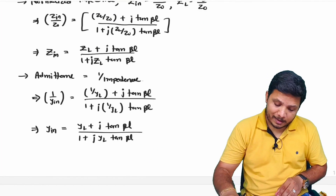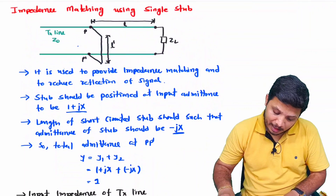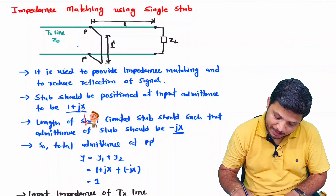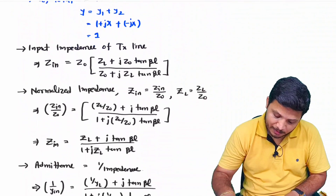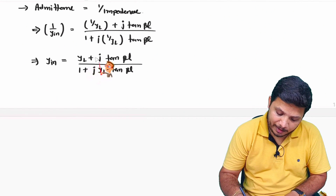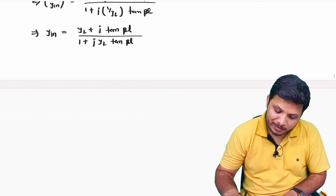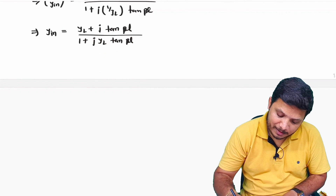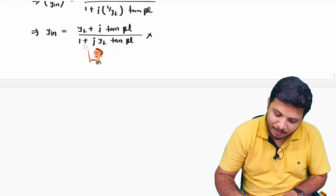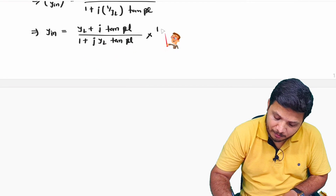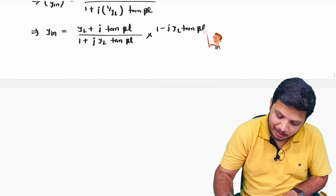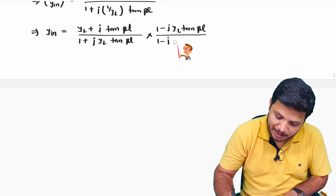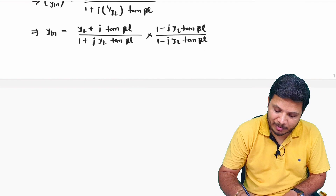As stated, the input admittance should be 1 + jx. So we compare our input admittance expression with 1 + jx. To separate real and imaginary parts, I multiply and divide by the complex conjugate of the denominator: (1 - jYL·tan βL) / (1 - jYL·tan βL).